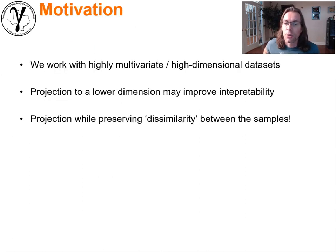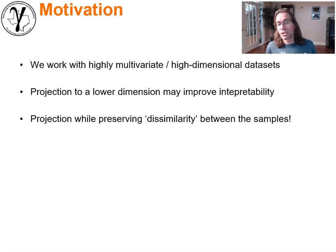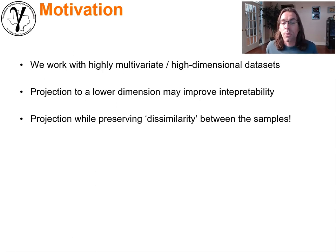So what's the motivation? Why do we want to cover multidimensional scaling? Just like all of the other discussion around feature selection and feature projection, we're concerned about the fact that in modern problems we're forced to work with highly multivariate, high-dimensional data sets. We've already talked about the curse of dimensionality, multicollinearity, and related subjects. We want to use projection to a lower dimension to improve the stability and interpretability of our models, and we want to do this with multidimensional scaling while preserving dissimilarity between our samples.